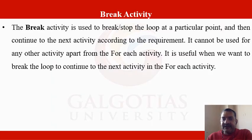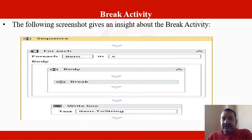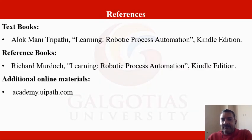Break activity is used to break or stop the loop at a particular point and then continue to the next activity. It can only be used with the for each activity. In this example: for each item in x, with a write line 'item.toString()' — the break activity is placed inside the for each loop body to exit the loop when needed.